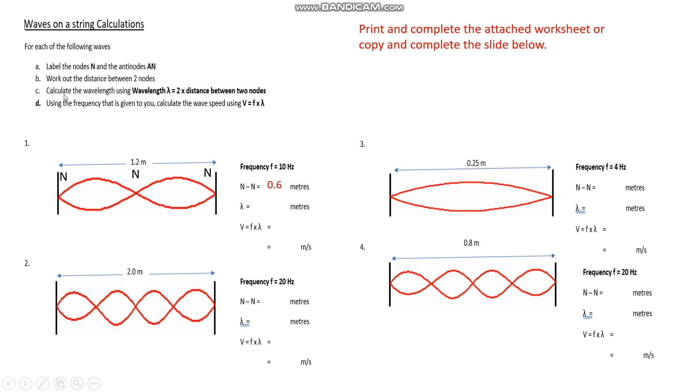Going on, step C, calculate the wavelength of the wave using wavelength equals 2 times the distance between two nodes. Well, our node to node distance is 0.6 meters, so our wavelength is double that, 1.2 meters.